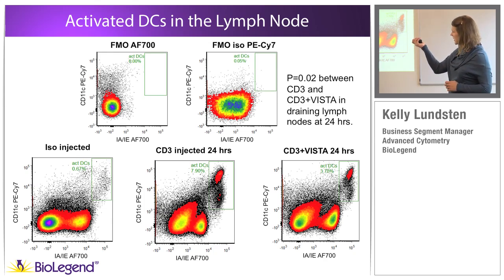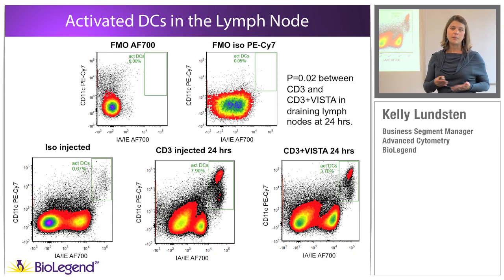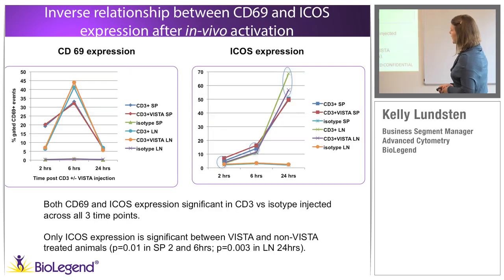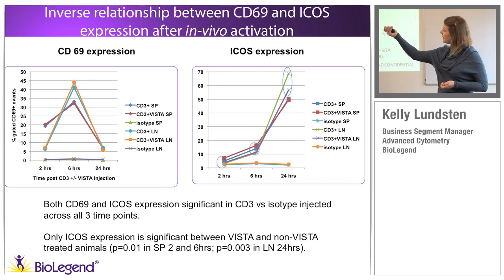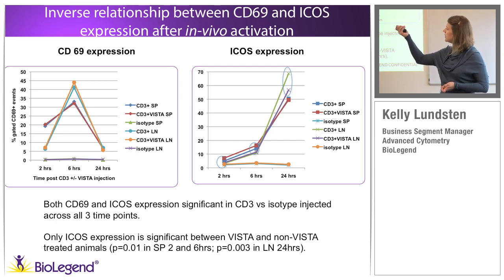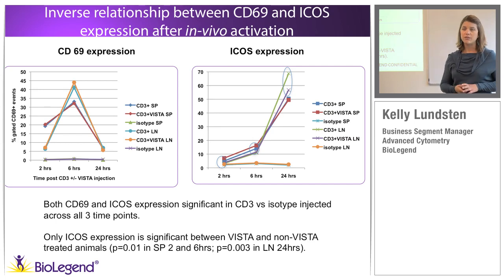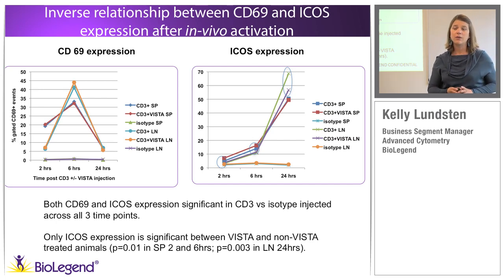With CD69 and ICOS activation markers over time: CD69 came up right away. In spleen and lymph node, CD69 was very strongly expressed by six hours, with no statistical difference with VISTA treatment. At 24 hours it dropped off very quickly, almost back to resting levels. ICOS, on the other hand, showed statistical significance in the spleen early on and then in the lymph nodes later with VISTA treatment.